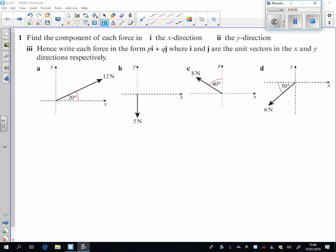Exercise 5a, question 1. We're looking at this 12-Newton force here. We're splitting it into its components. Next to the angle, I've got 12 cos 20. Opposite the angle, I've got 12 sine 20.